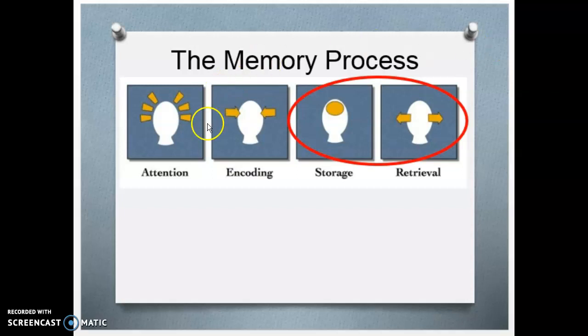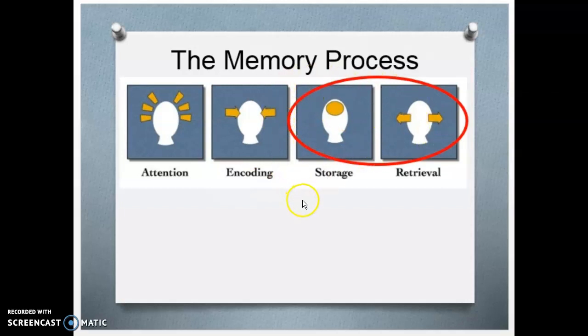In the beginning, I mentioned that the way we learn something is going to affect how we remember it. When it comes to encoding information into our memory, we need to do stuff with that information — whether it's rehearse it over and over again, chunk it into meaningful pieces, make associations with things we already know, or use some fun memory strategies. We're going to talk about those in this section to demonstrate how the way we encode things affects how we remember things.